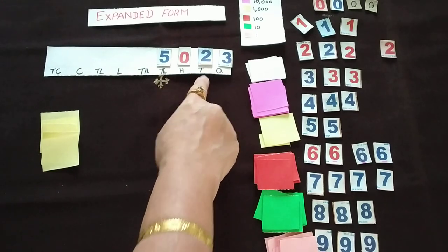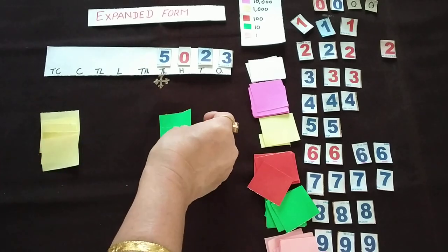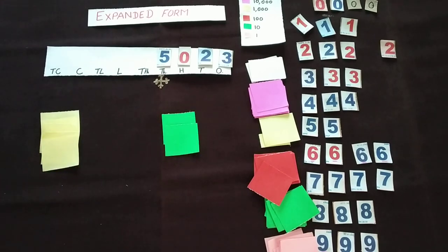Then 10s means 2. 10s means green color. So green color, 2 sheets. Leave some space and then put here 2 sheets.